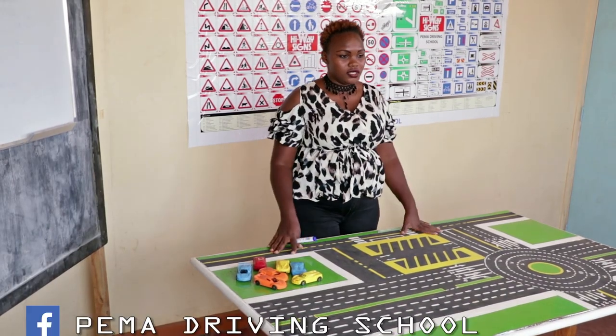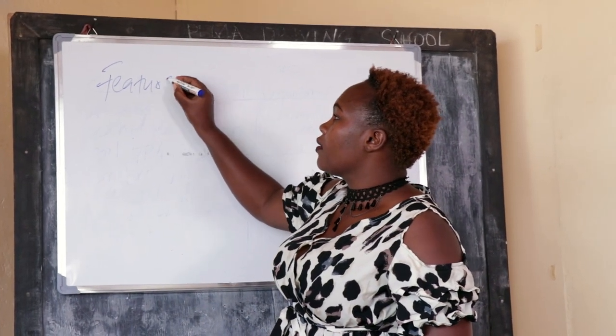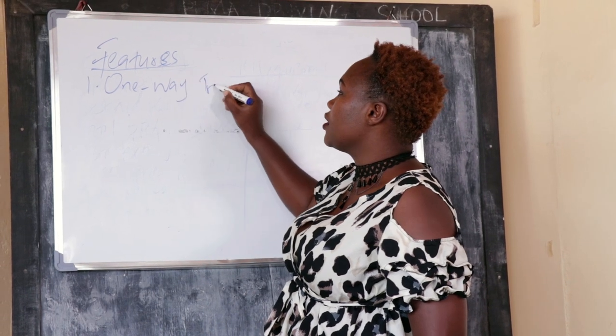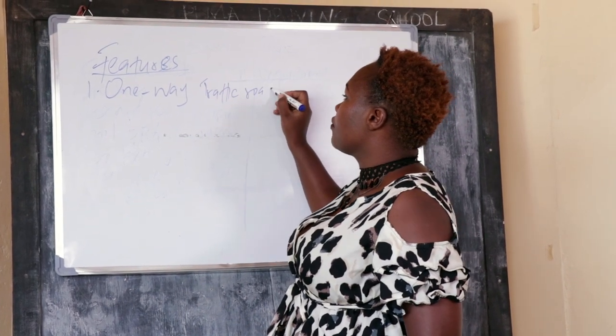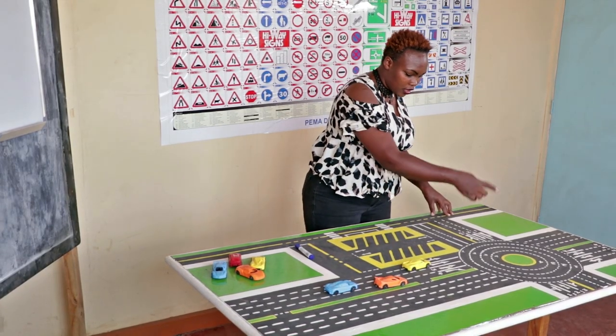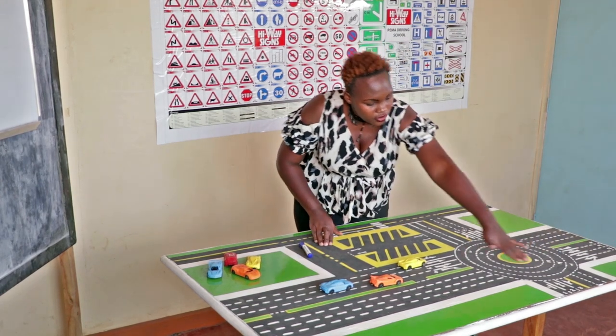So this is a model town board. This is an example of roads we have in Kenya, especially in Kenya and even in South Africa. We have several features in this road. One of them is a one-way traffic road. One-way traffic road is this one — all vehicles travel in the same direction. This is a one-way traffic road, this is a one-way traffic road, this is a one-way traffic road, this is also a one-way traffic road.